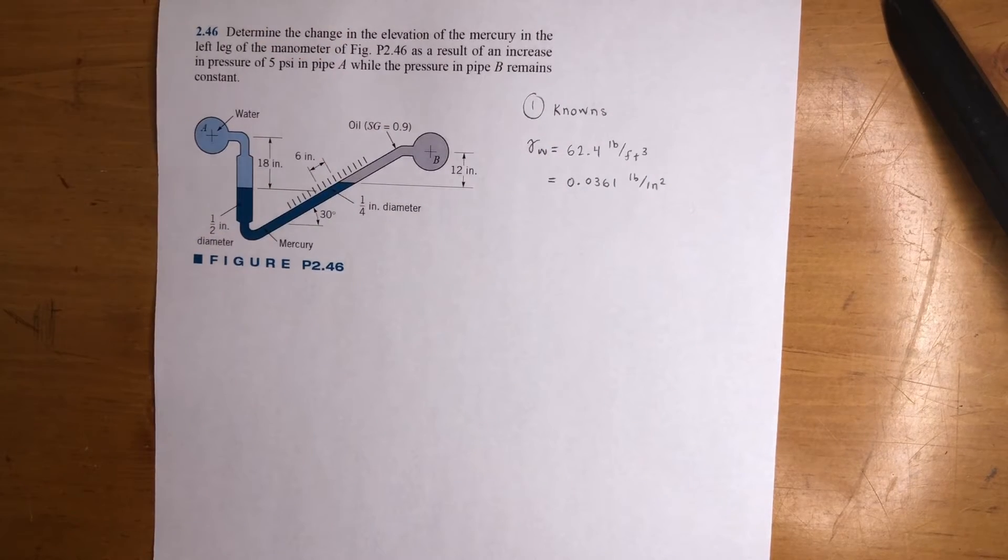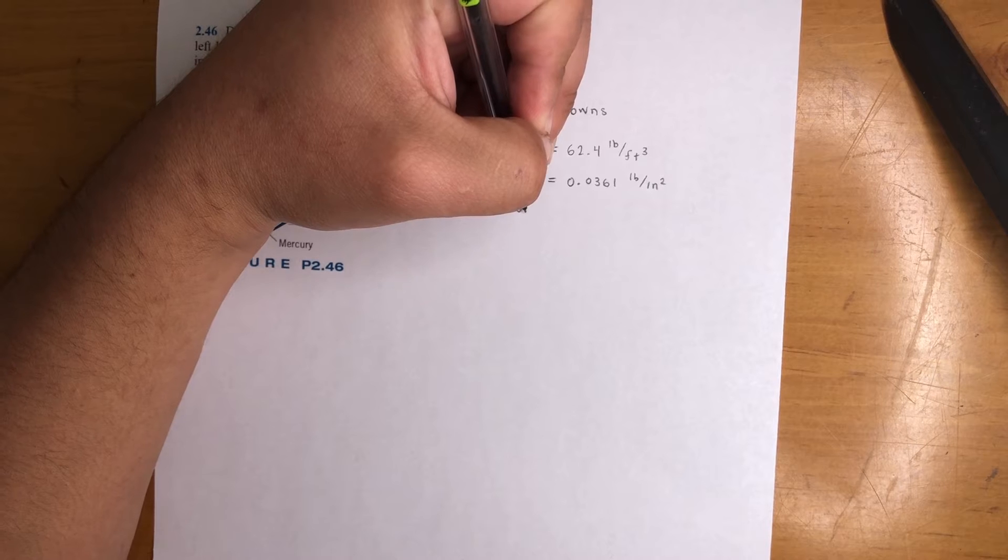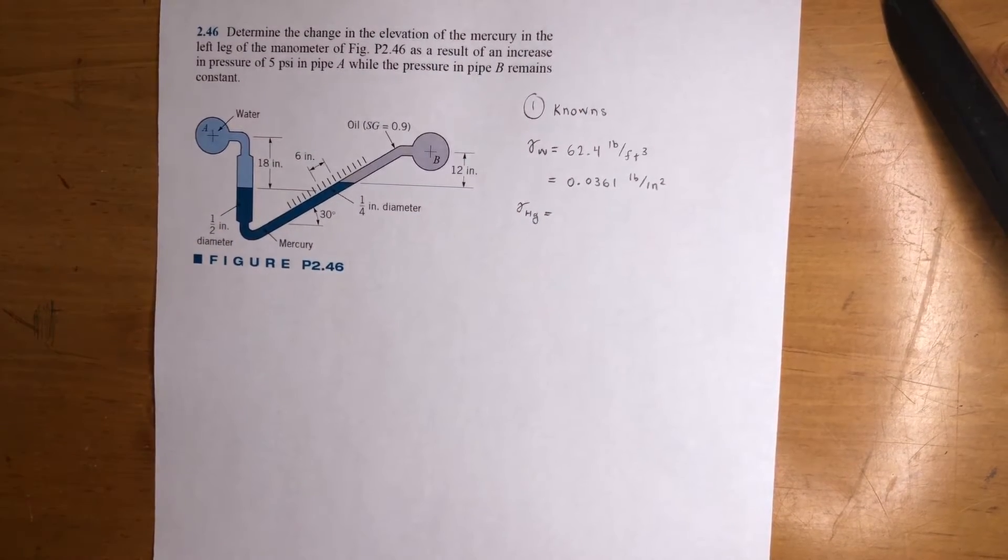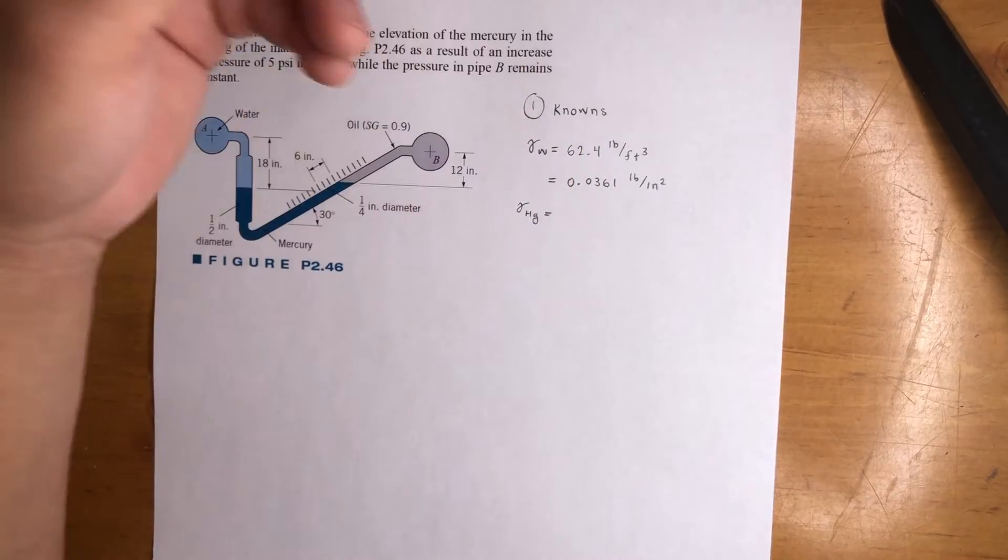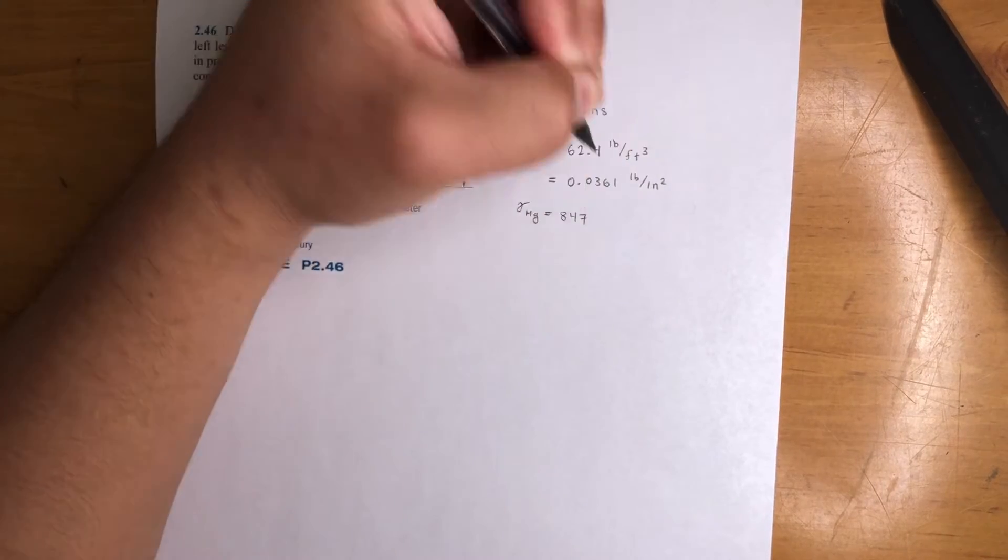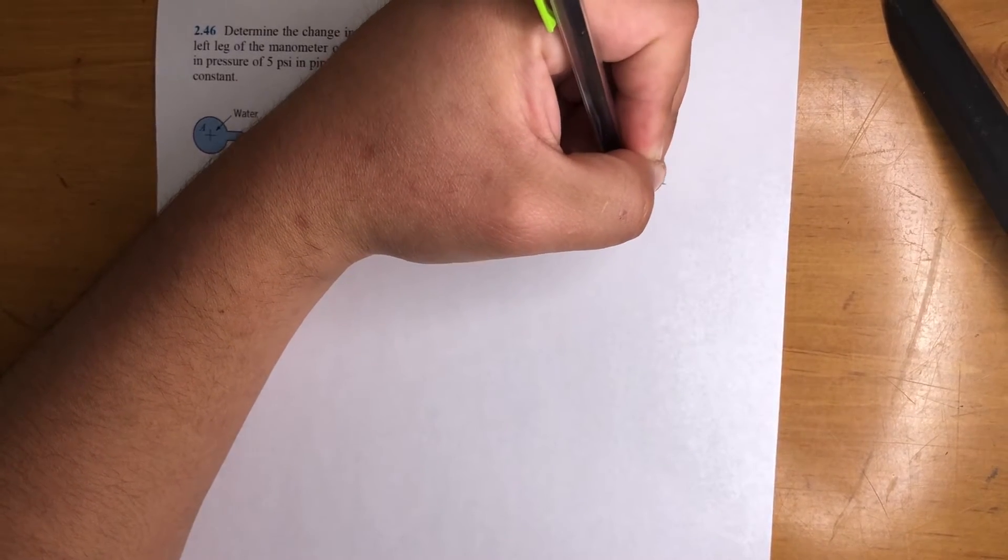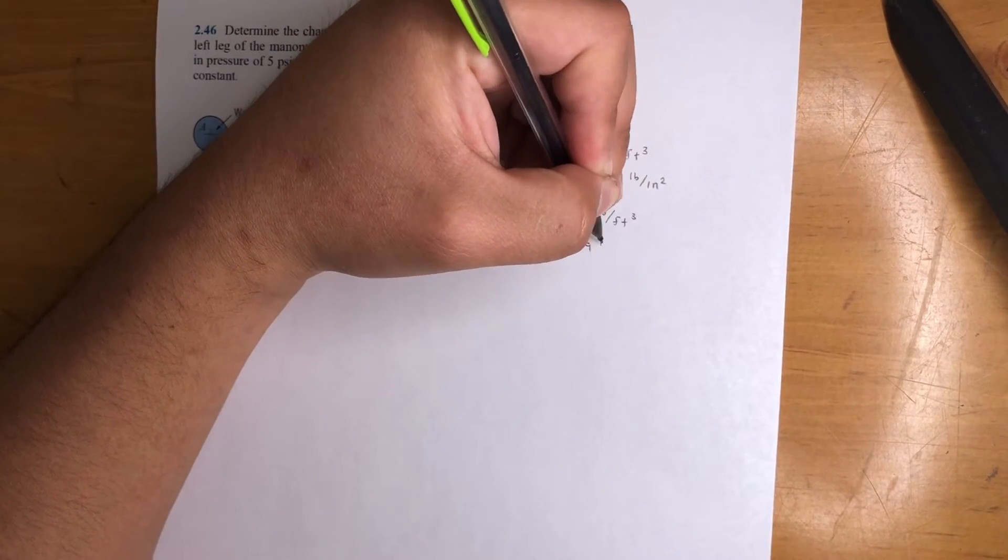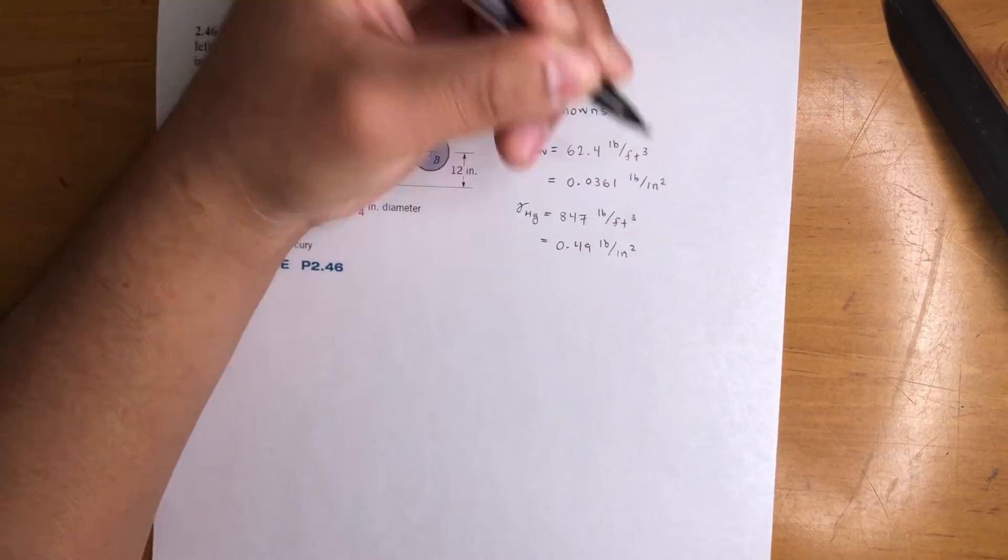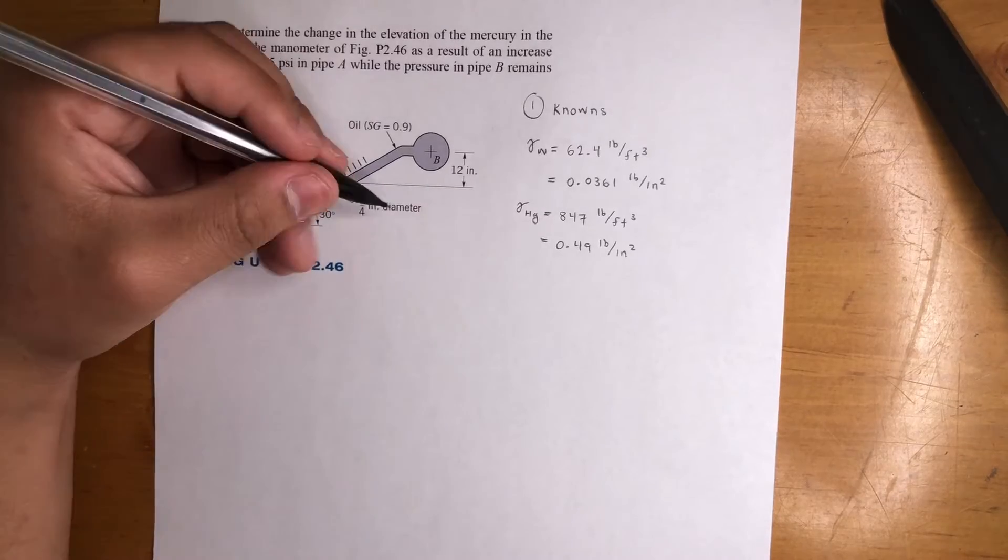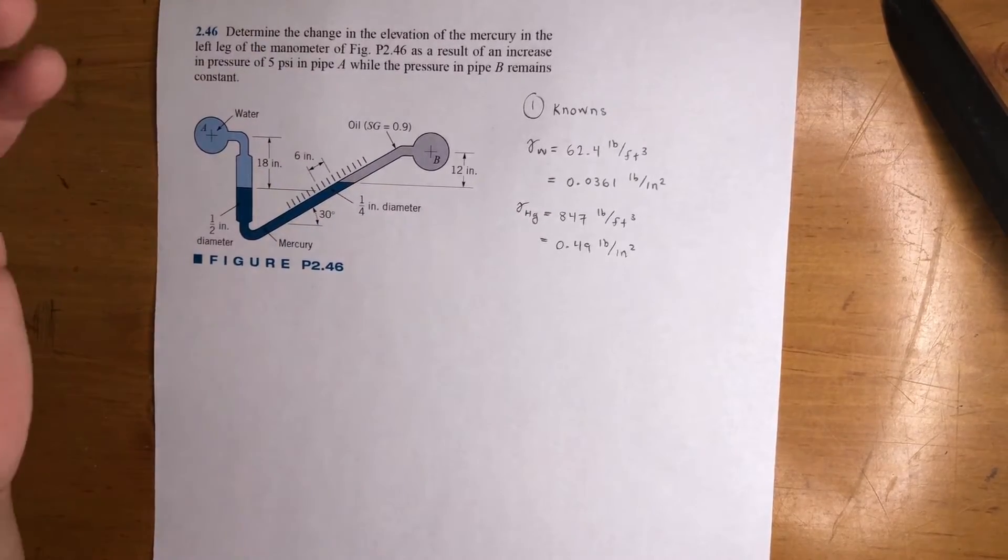We're dealing with mercury. I don't believe it mentions it here in the problem. This will be given. Your professor will give this number to you, so don't even worry about it. 847 pound per feet cubed. Converting that is going to be 0.49 pound per inch cubed. Everything in cubed because we got PSI, then this is in inches, and this is in inches as well to make life easier.